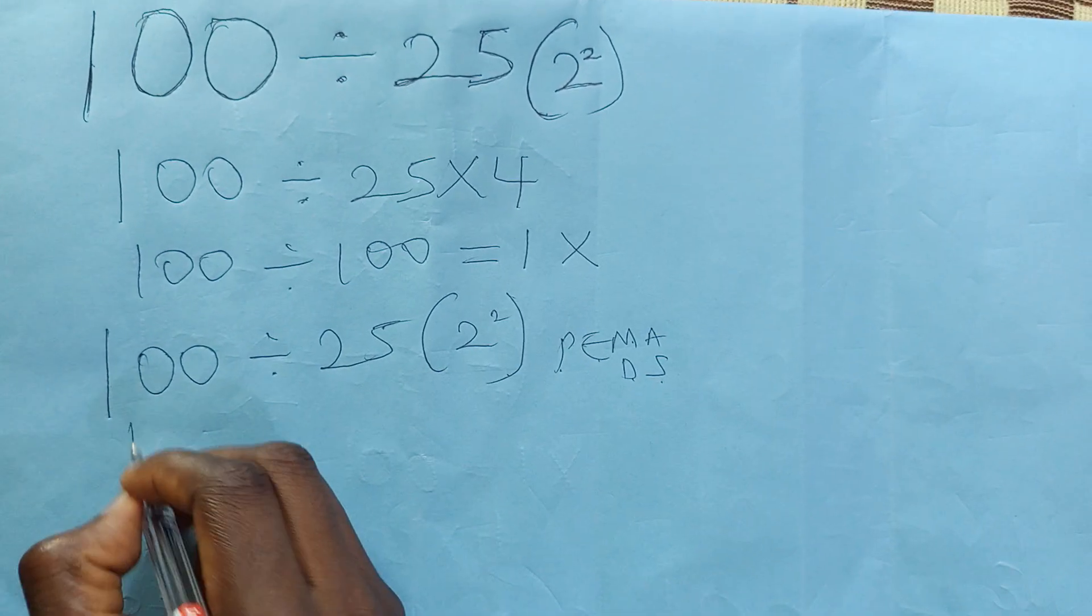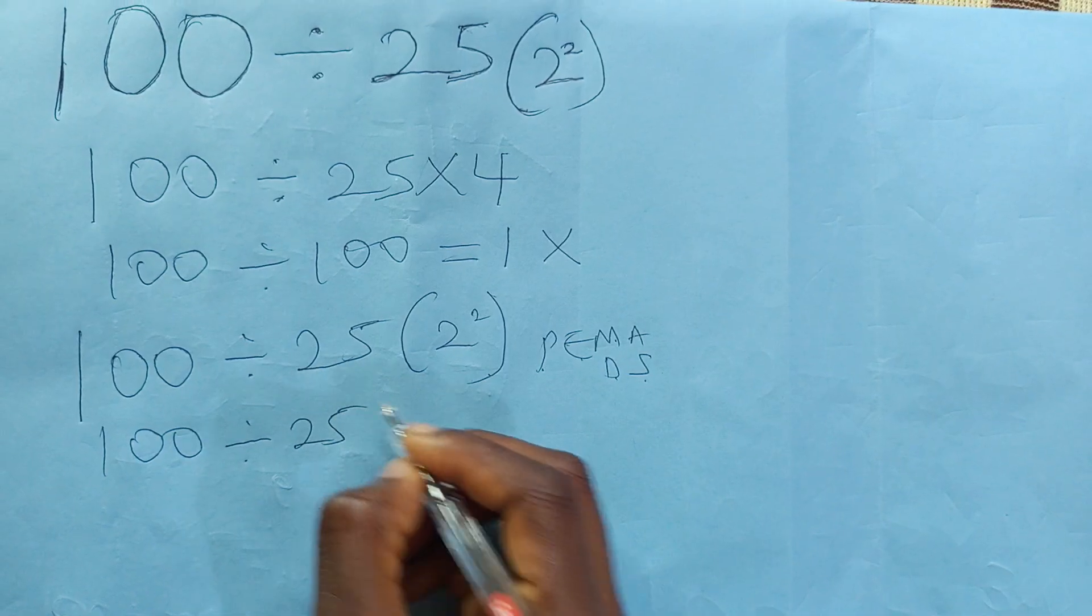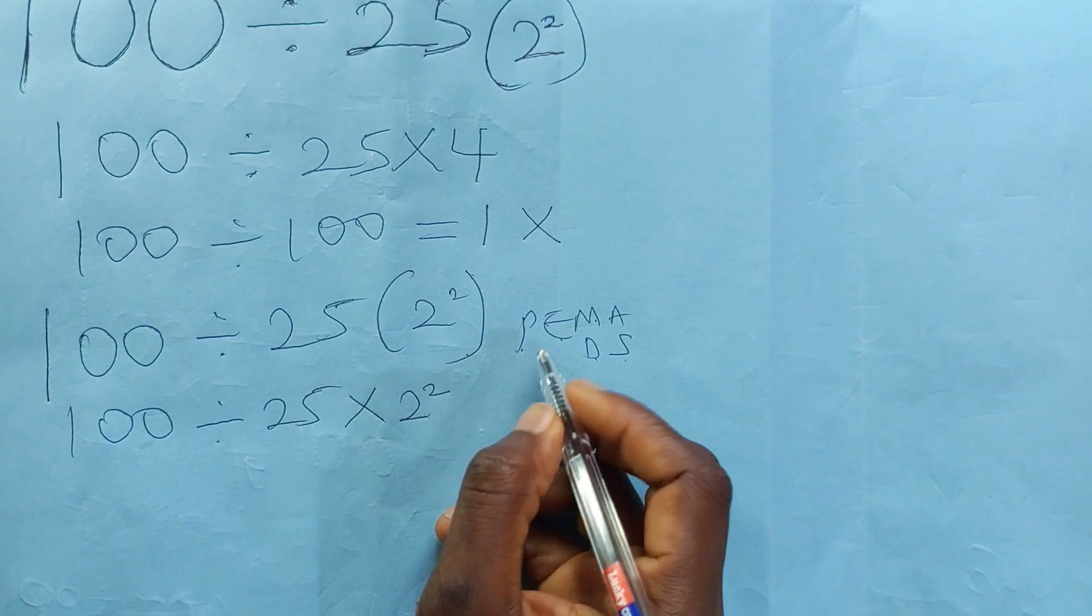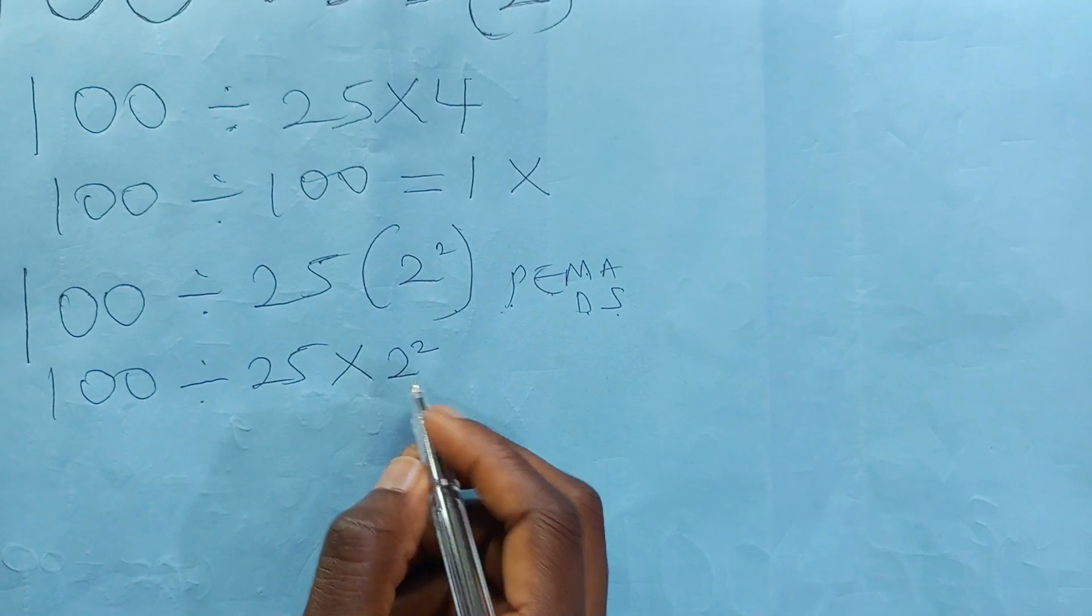So we have to open this: 100 divided by 25 times 2 square. After parenthesis is exponent. What is 2 square? 4.